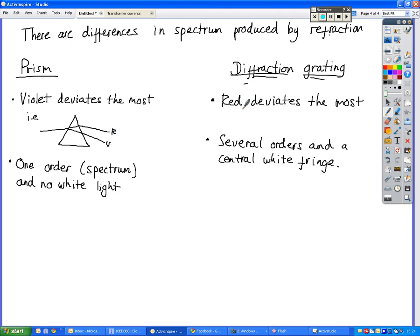In the diffraction grating however, we've got red deviating the most, so we see red light being bent far more than the other types of light. And we also see that there are several orders on here rather than just one, and we've got a central white fringe.